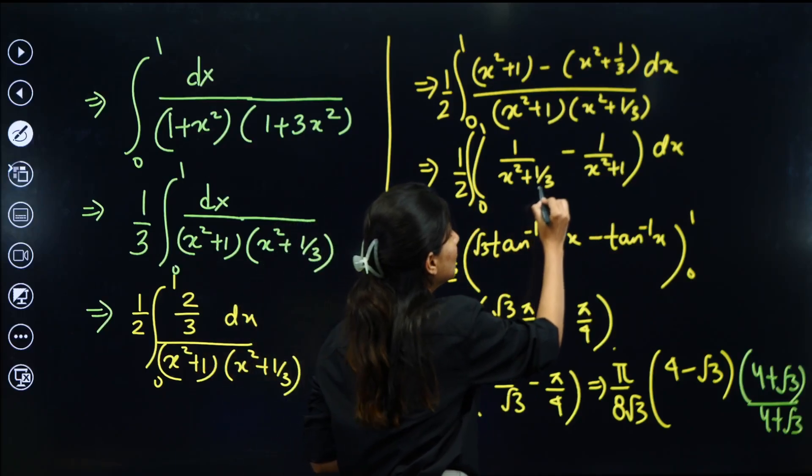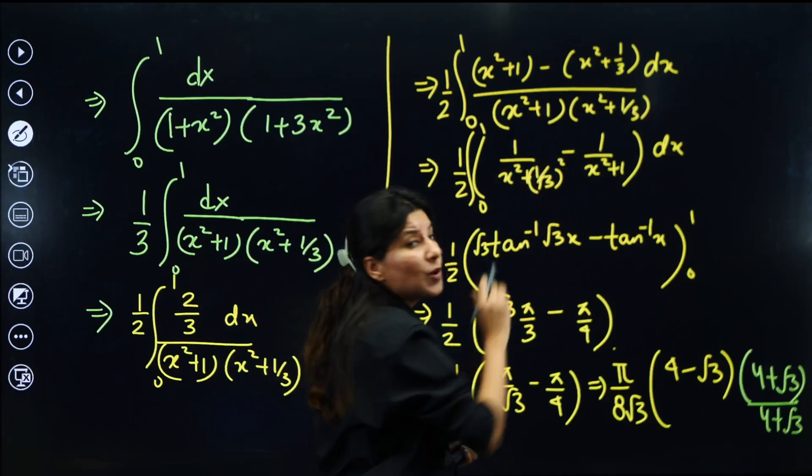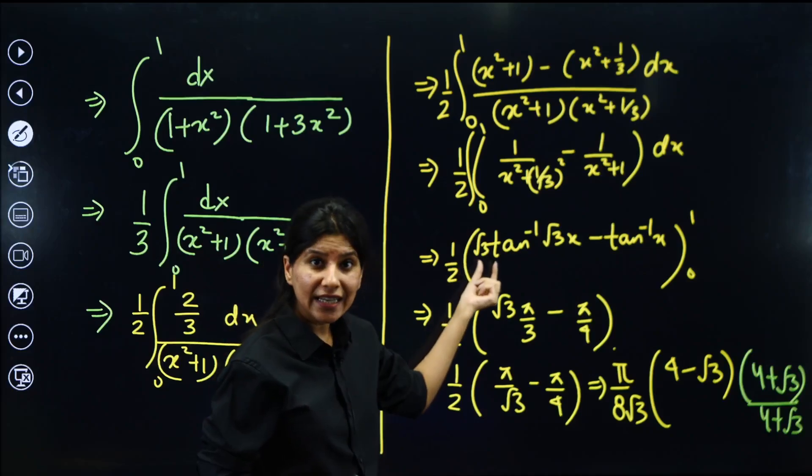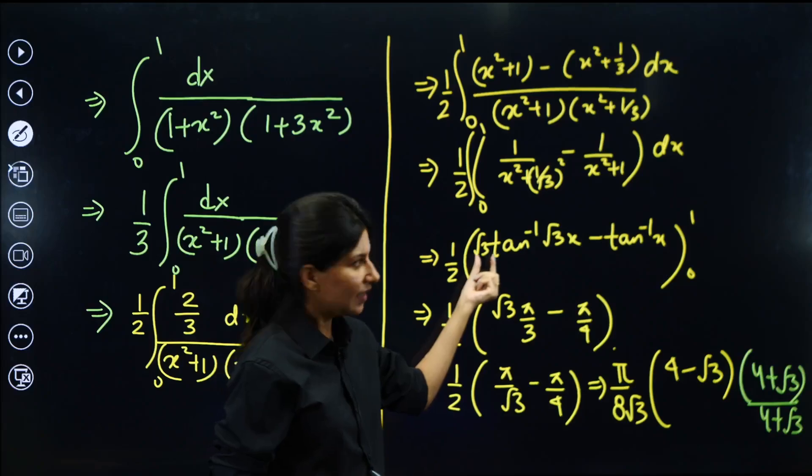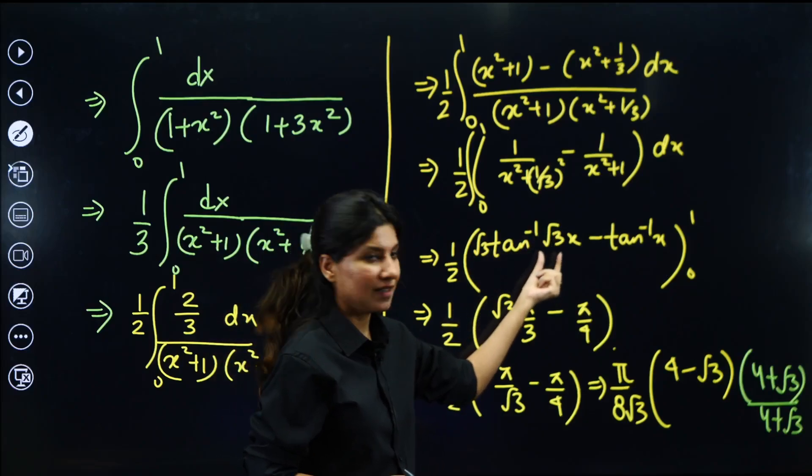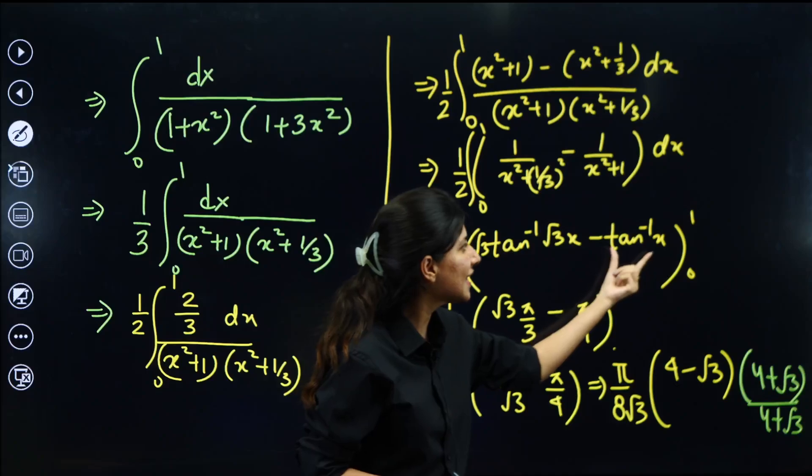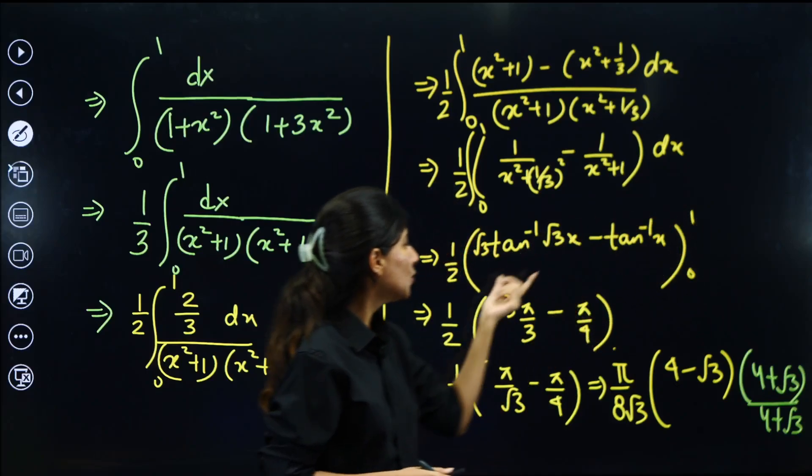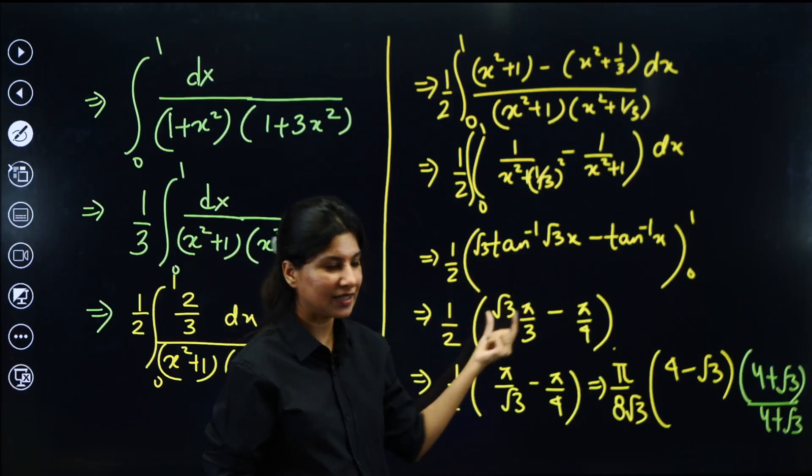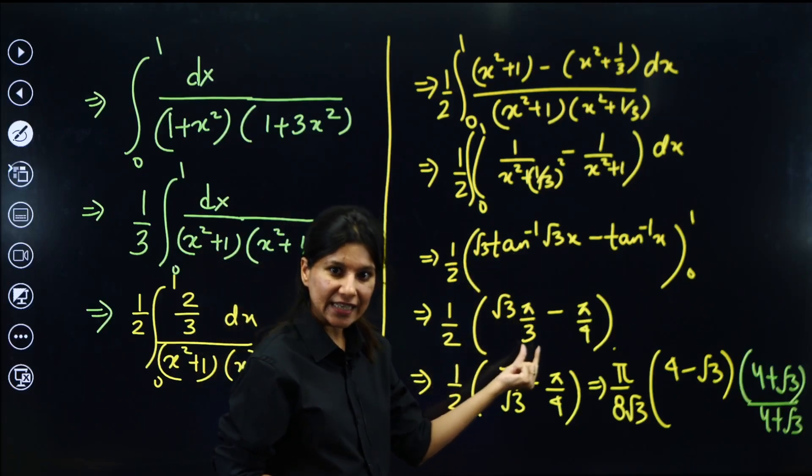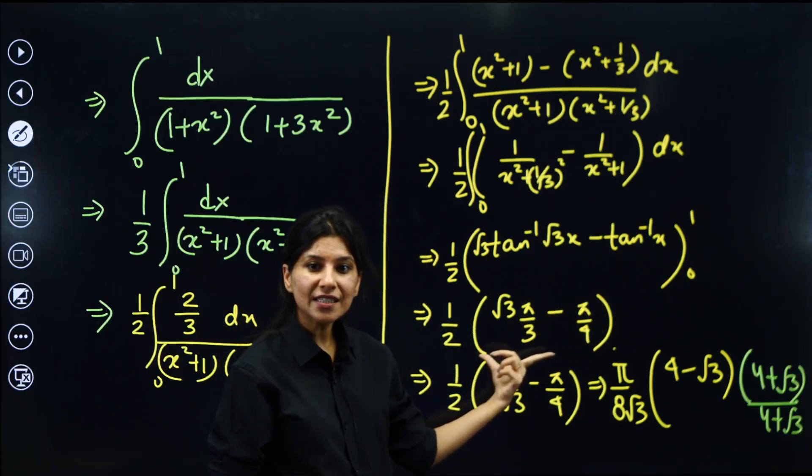Now x square plus 1 upon all this. So these two get cancelled out. So 1 upon x square plus 1 by 3 minus 1 upon x square plus 1. Can you see it? Root 3 square. 1 upon x square plus a square integration. 1 by a. So that would be 1 upon 1 by root 3, root 3. Tan inverse x by a. So tan inverse root 3 x minus tan inverse x, 0 to 1. Put the upper limit. Tan inverse root 3, 60 degree pi by 3. Tan inverse 1 is pi by 4. This is your answer.